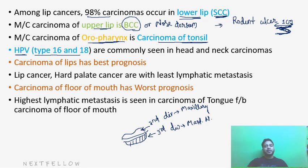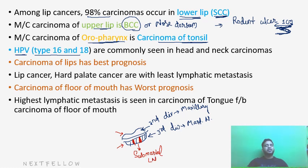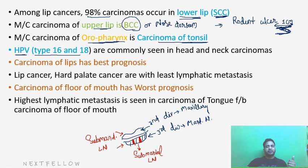The carcinoma of lips has the best prognosis. The central part of the lower lip drains into the submental lymph node, whereas the upper lip and the rest of the lower lip drain into the submandibular lymph node. These lip cancers have the best prognosis because we can resect the lip and remove the submental or submandibular lymph nodes.